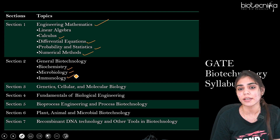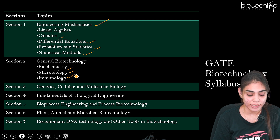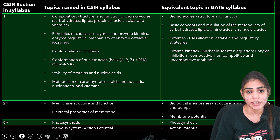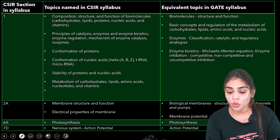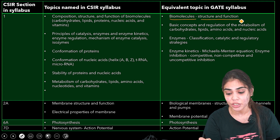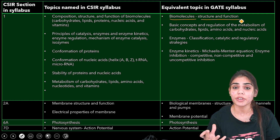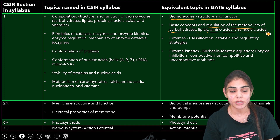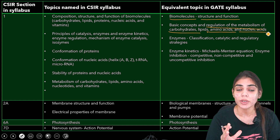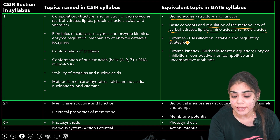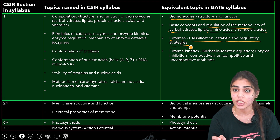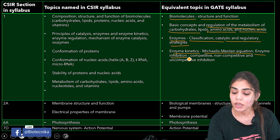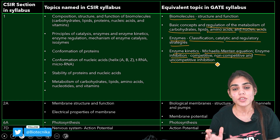Coming to the biochemistry section under General Biotechnology, let's see what topics are similar for both GATE Biotechnology biochemistry as well as CSIR NET Life Sciences. In GATE Biotechnology you will find the topic biomolecule structure and function, where you have to learn about carbohydrates, proteins, vitamins, different types of amino acids, as well as the regulation of metabolism of carbohydrates, lipids, amino acids, and nucleic acids. You also have to learn about enzymes — their classification, catalytic and regulatory strategies, and kinetics including the Michaelis-Menten equation and enzyme inhibitions such as competitive, non-competitive, and uncompetitive inhibition.